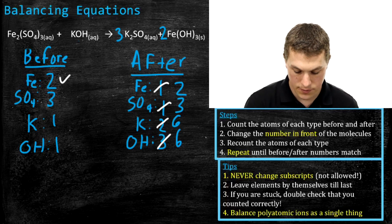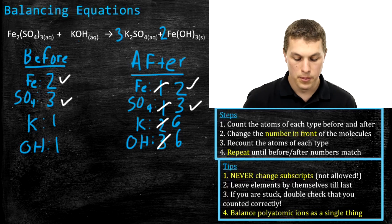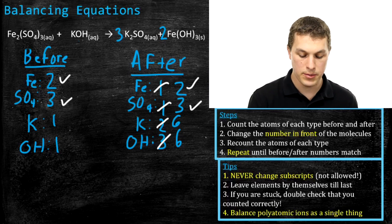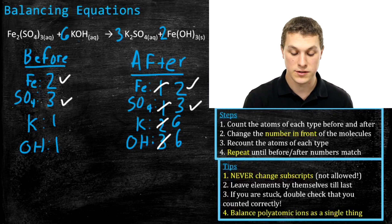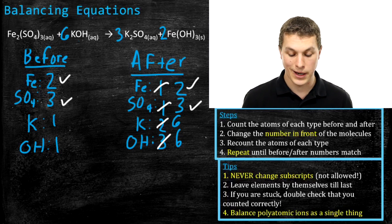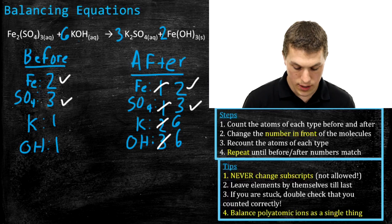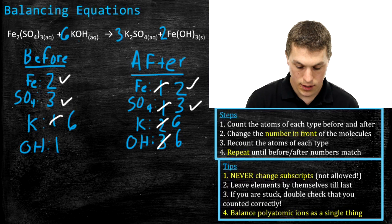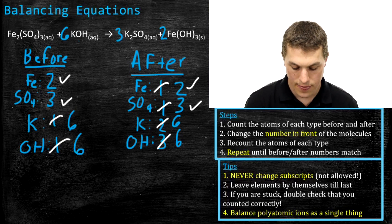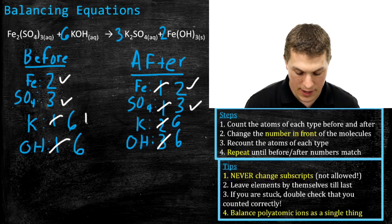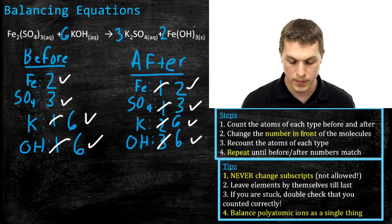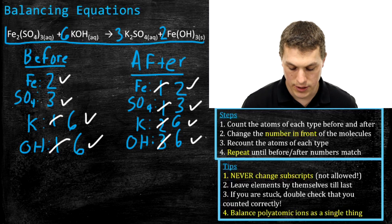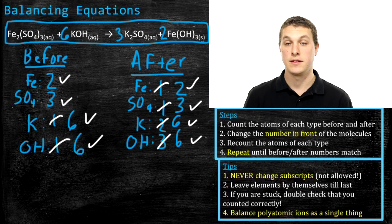Our twos and threes match on both sides, but potassium hydroxide only has one potassium and one hydroxide, while the other side has six of each. Putting a six in front of potassium hydroxide gives six potassiums and six hydroxides — exactly what we need. Recounting the before side: still two iron and three sulfate; now six potassium (six KOH × one K each) and six hydroxides. Everything matches. Our final balanced equation: one iron sulfate combined with six potassium hydroxides gives three potassium sulfates and two iron hydroxides.